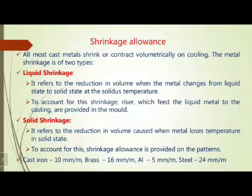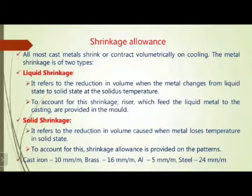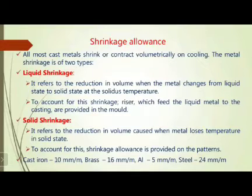As for solid shrinkage, it involves volume reduction when the metal loses temperature in the solid state. The shrinkage is classified according to material. On screen: cast iron 10 mm per meter, brass 16 mm per meter, aluminium 5 mm per meter, and steel 24 mm per meter.